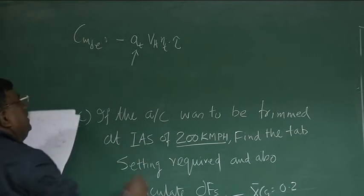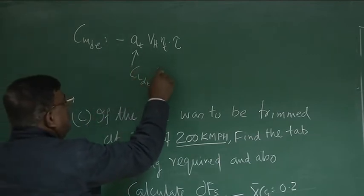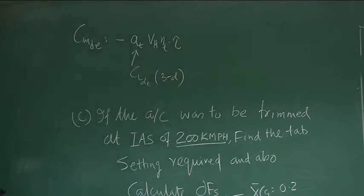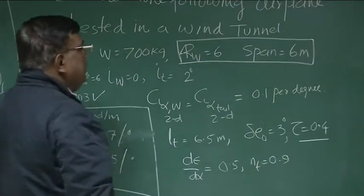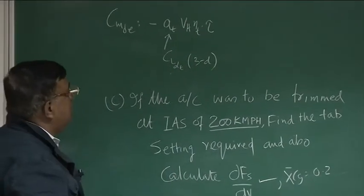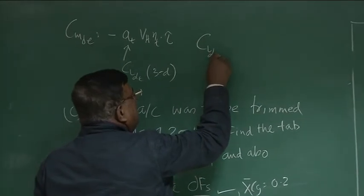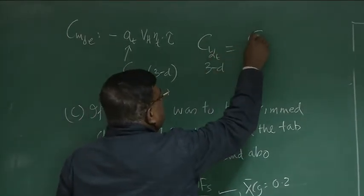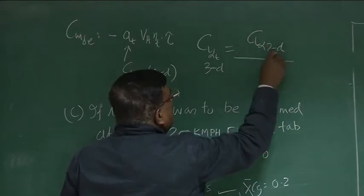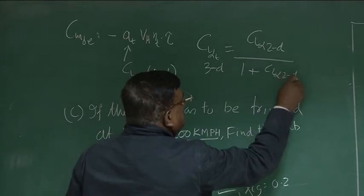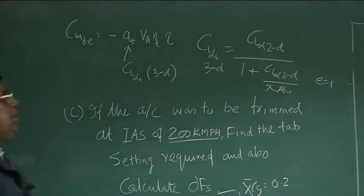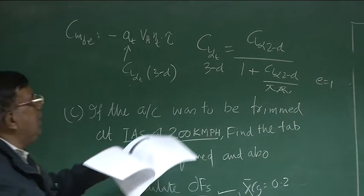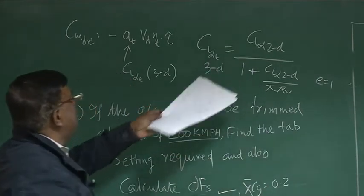Let us see how to calculate CM_δe. We need to calculate CM_δe given the data is there. CM_δe was given as minus At or CL_α tail into VH ηt into τ. What was At? At was CL_α tail. Of course, you have to have three dimensional value. Right? What is given here? CL_α wing and CL_α tail 2D is given. That is 0.1 per degree. But this formula wants CL_α tail three dimensional. So what I have to do? CL_α tail three dimensional can be easily calculated. CL_α 2D tail by 1 plus CL_α 2D by π aspect ratio. I am taking e equal to 1. As simple as that. Just mechanical job. You put the 2D value here, put the aspect ratio value π here, you get CL_α 3D.